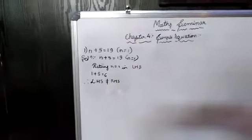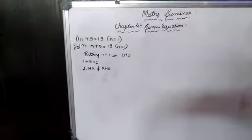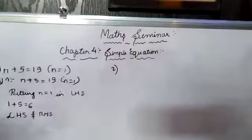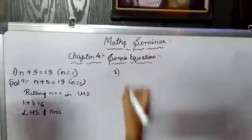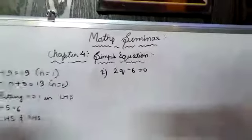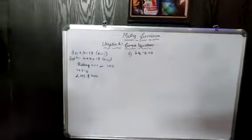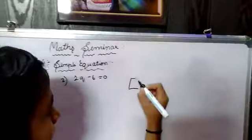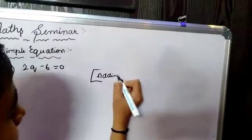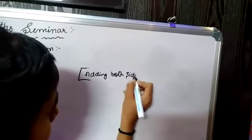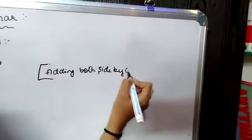Let us solve the second question. Give the first step to solve the equation. The question is 2Q minus 6 equal to 0. So we have to give the first step to solve the equation. We have to write: adding both sides by 6.